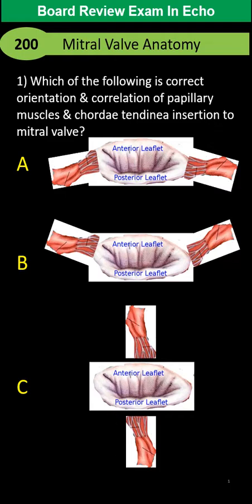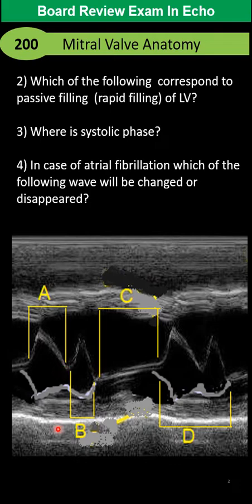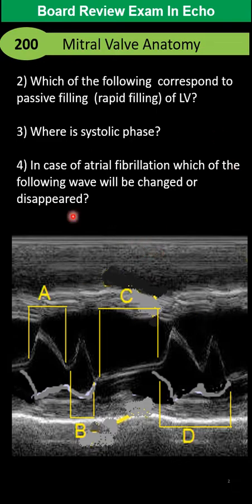Here we have mitral valve M-mode and plaques or PISAs at the mitral valve level. You can see those components. Where is the systolic phase on this one? And where is rapid filling — corresponding with which wave? And finally, if we have AFib (atrial fibrillation), which of those waves will be changed and disappear or disfigured?